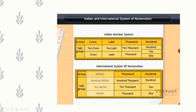In the Indian number system, we have the units period with 3 place values: 1's, 10's, and 100's. The thousands period has 2 place values: thousands and ten thousands. The lakhs period has 2 place values: lakhs and ten lakhs. The crores period has 2 place values: crores and ten crores. Only the units period has 3 place values; all remaining periods have 2 place values.